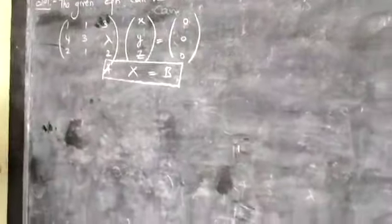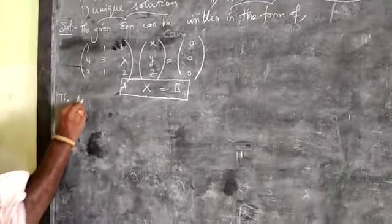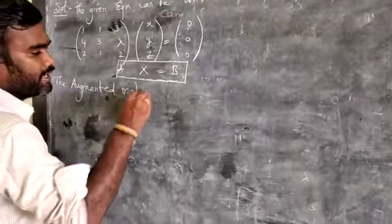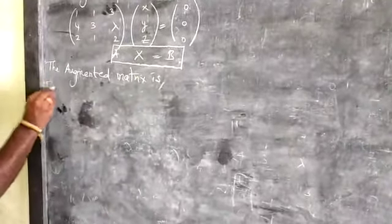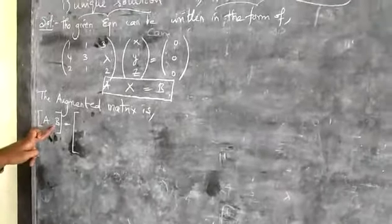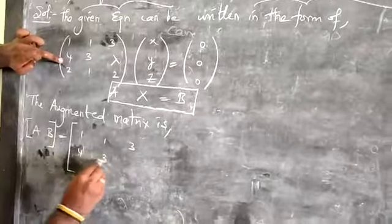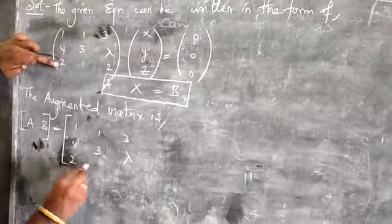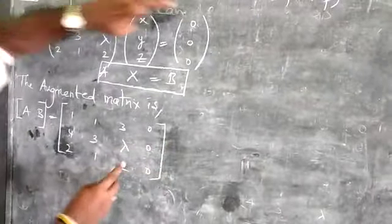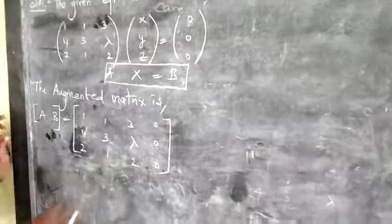Now we want to form the augmented matrix. The augmented matrix is the combination of A and B. We write matrix A: 1, 1, 3; 4, 3, lambda; 2, 1, 2. Then matrix B: 0, 0, 0. This is matrix A and this is matrix B — together they form the augmented matrix [A|B]. Lambda is present in the R2 row.